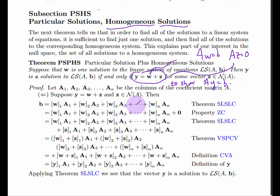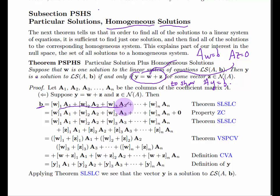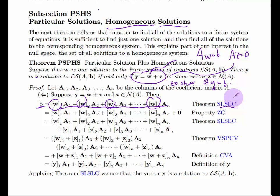We start with Y equals W plus Z. We know that W is a solution, so AW equals B. We know that Z is in the null space, so AZ equals zero. And we want to show that AY equals B. Since W is a solution, B can be written as a linear combination of the columns of A where the coefficients are the entries of W.